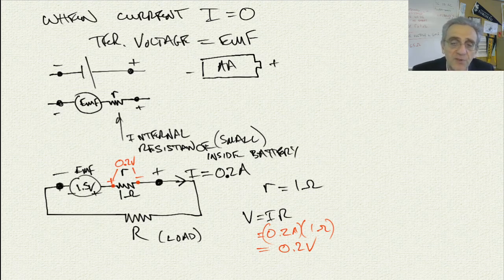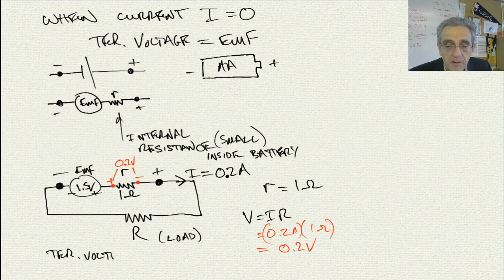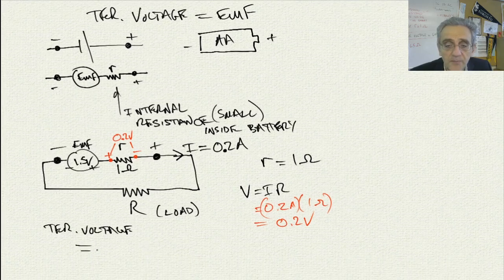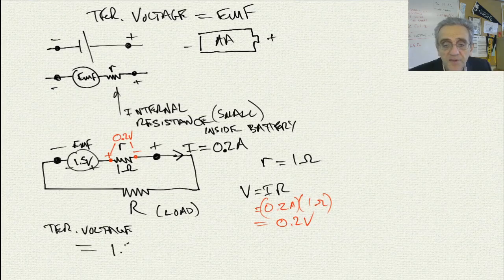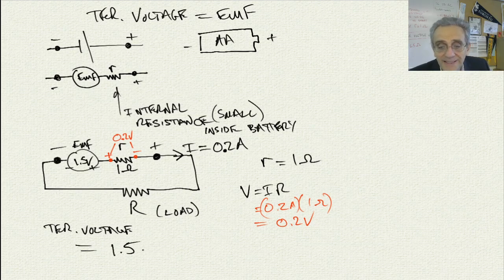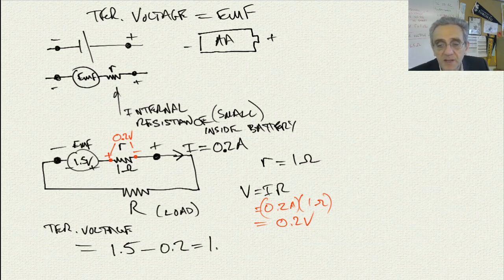So therefore, what is the terminal voltage across the terminals of the battery? Well, the terminal voltage in this case is going to equal 1.5 minus 0.2, which gives me 1.3 volts.